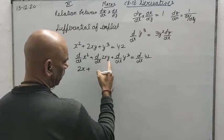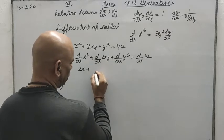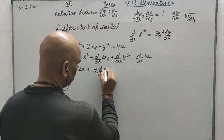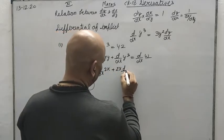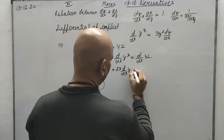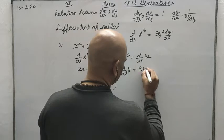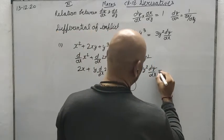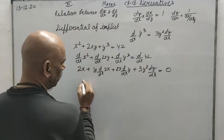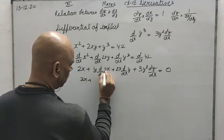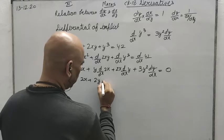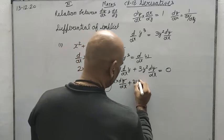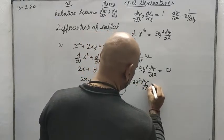Here we will apply the product rule. So the first function remains as is and the second is differentiated. y remains like this, d over dx of 2x; and 2x remains like this, then d over dx of y. The differential of y cubed will be 3y squared dy by dx — whenever we differentiate y, dy by dx is also there. The differential of the constant 42 will be 0. So we get 2x plus 2y plus 2x dy by dx plus 3y squared dy by dx equals 0.